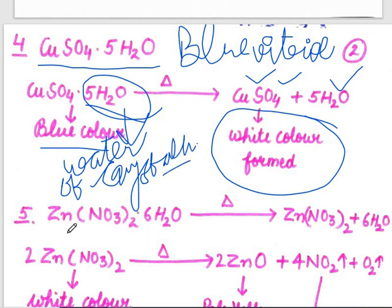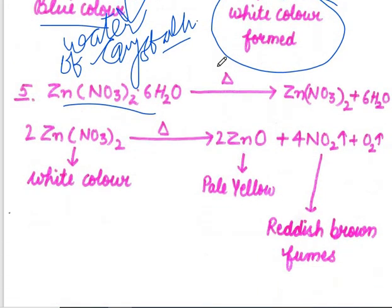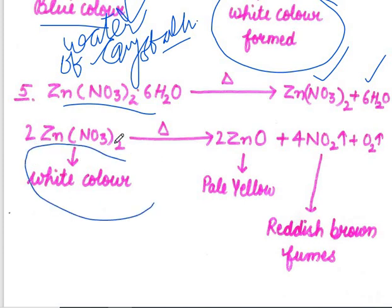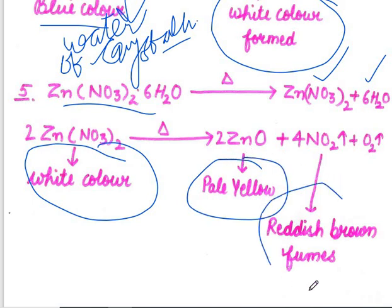Next is zinc nitrate. Zinc nitrate, Zn(NO3)2·6H2O, is a white color substance. On heating, it is converted into a pale yellow substance, and along with this, reddish brown fumes of NO2 gas — nitrogen dioxide — are also produced.